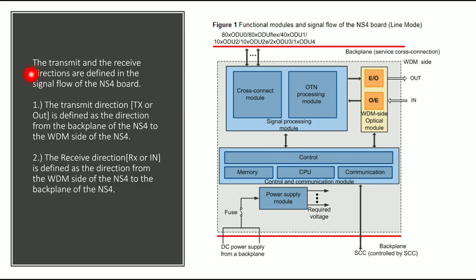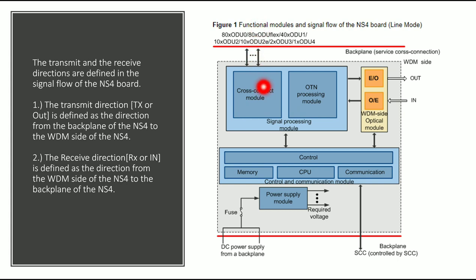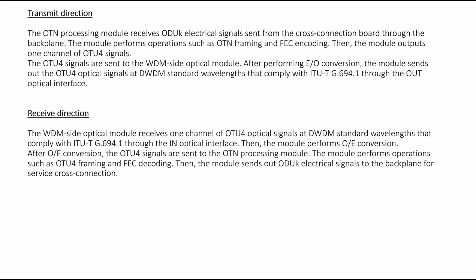The transmit and receive directions are defined in the signal flow of the NS4. The transmit direction is defined as the direction from the backplane of the NS4 to the WDM side of the NS4. The receive direction is the reverse direction — from the WDM side towards the backplane.